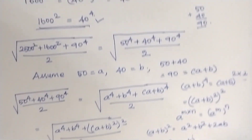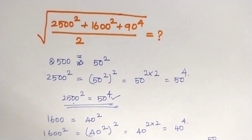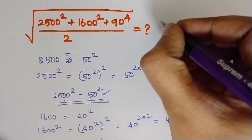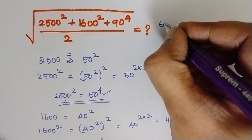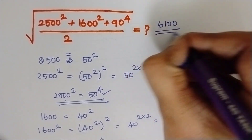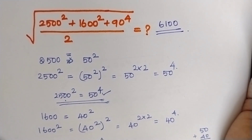Practice tries and tries and we will get a perfect answer. The equivalent value for this is 6100. Practice clearly. Have a nice day. Bye-bye.